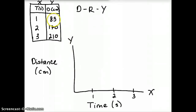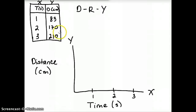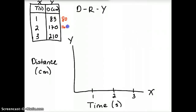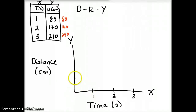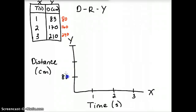Our data values are 83, 170, and 210 centimeters. We need to evenly space the y-axis into increments that cover all these values. We can use 80, 160, and 240. From here to here must be equal spacing to here and here. So we'll do 80, 160, and 240, making sure the spacing is consistent.